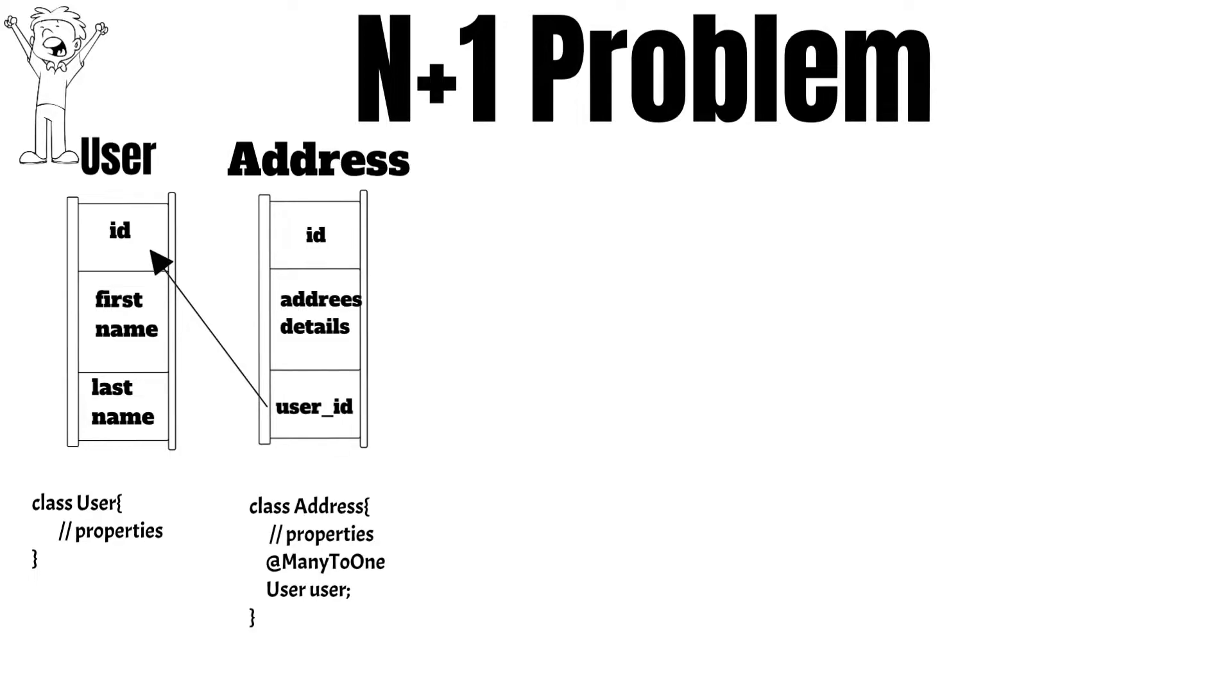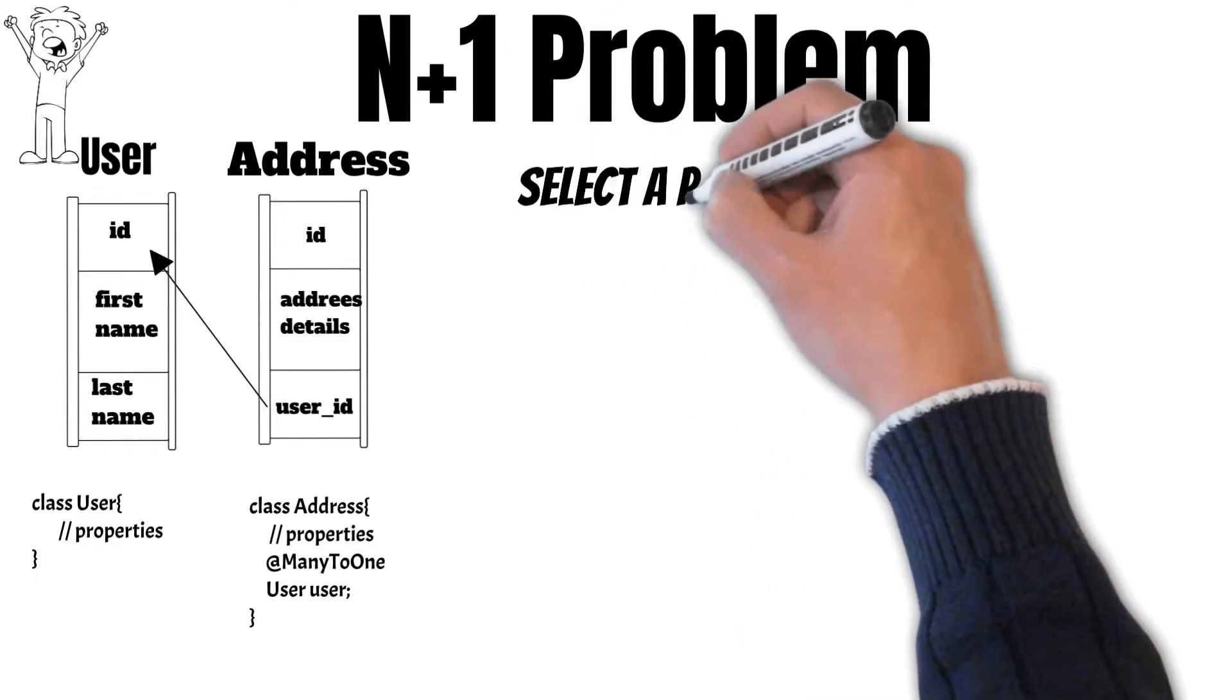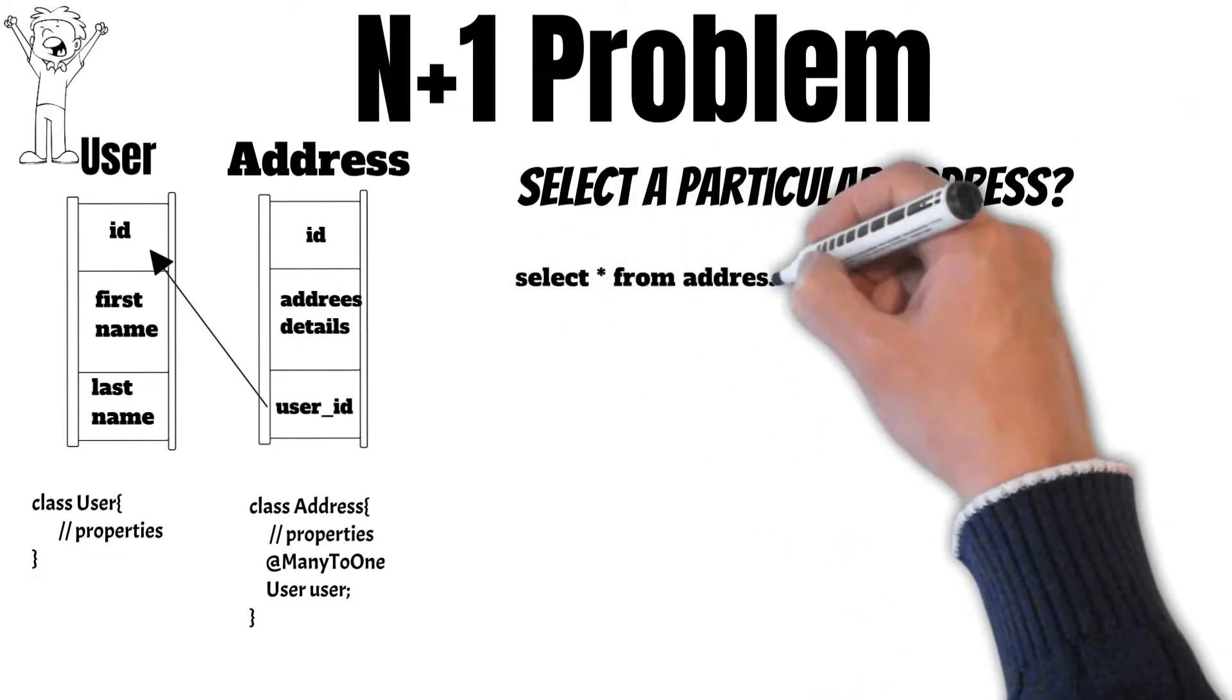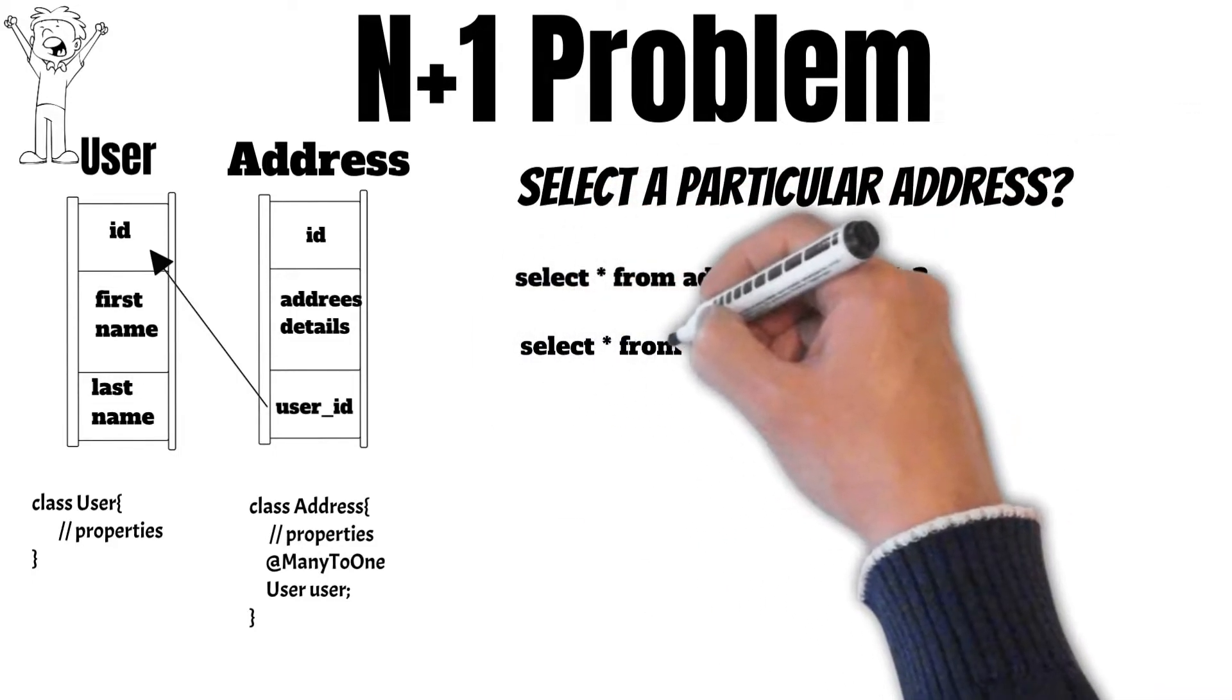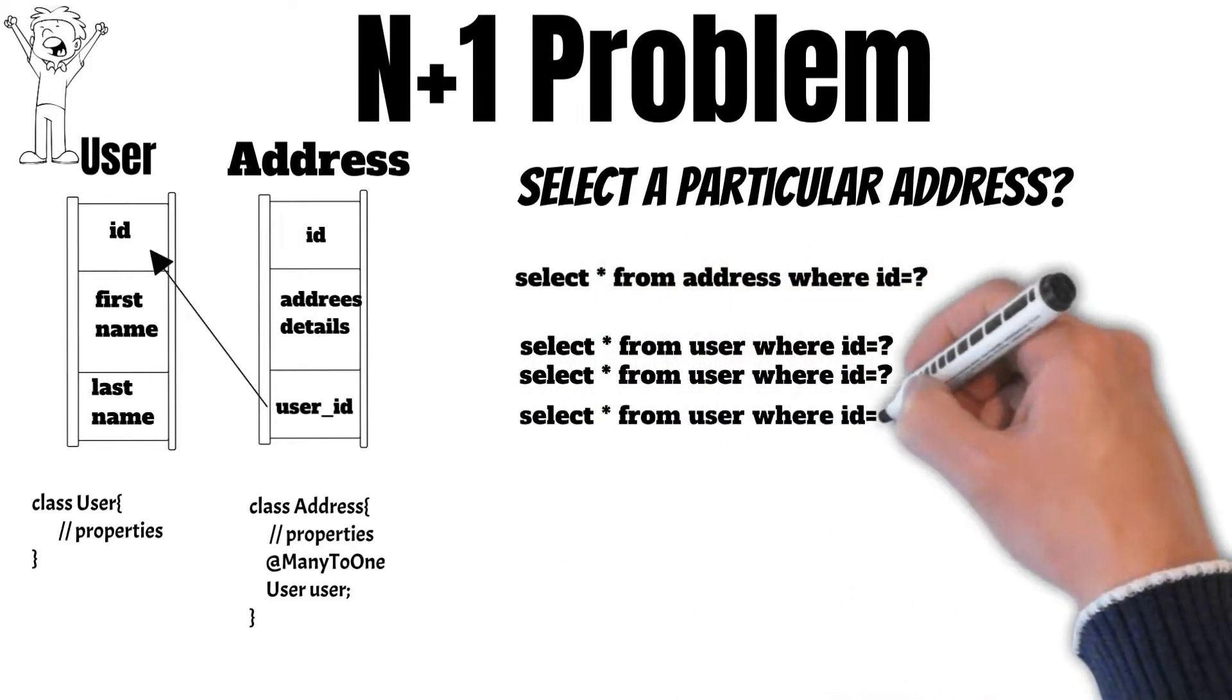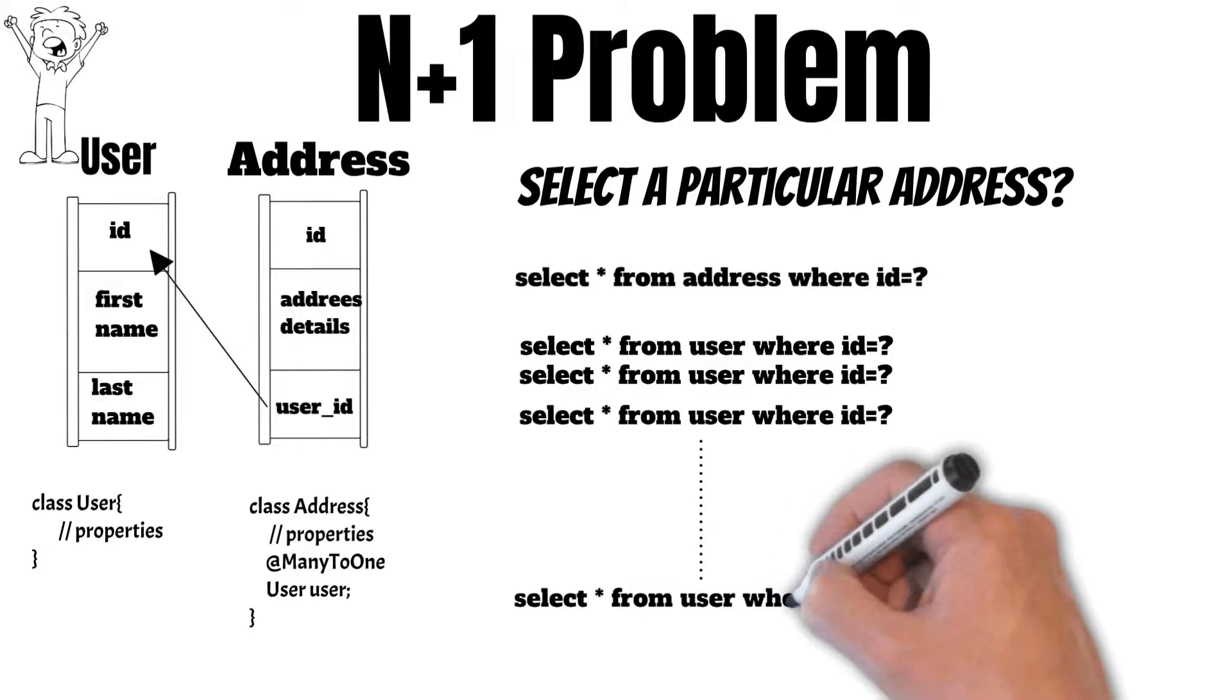So there can be many addresses belonging to a particular user which is pointed by the many to one annotation in the address entity class. Now suppose we want to select a particular address. First Hibernate will run a query for the address table, and then it will start running n additional queries for the user table because of the many to one annotation present.